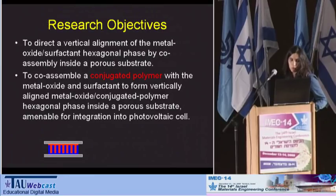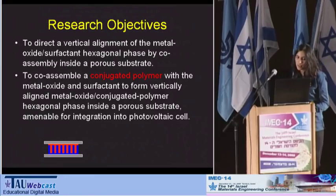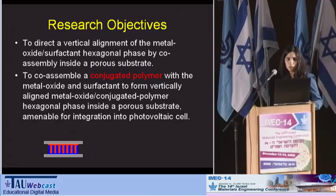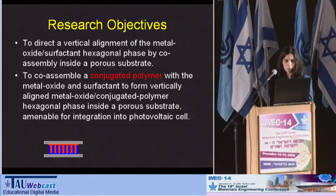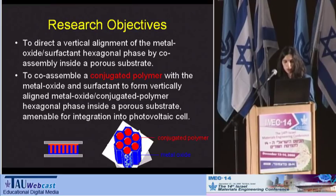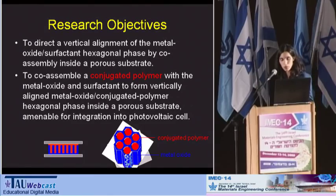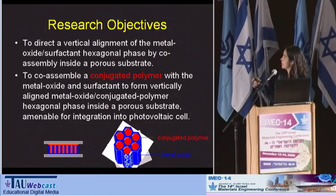This brings me to my research objective, which is to direct the vertical alignment of the metal oxide surfactant hexagonal phase by co-assembling inside the porous substrate, with the later goal of constructing a photovoltaic cell by incorporating a conjugated polymer inside the metal oxide surfactant mesostructure.